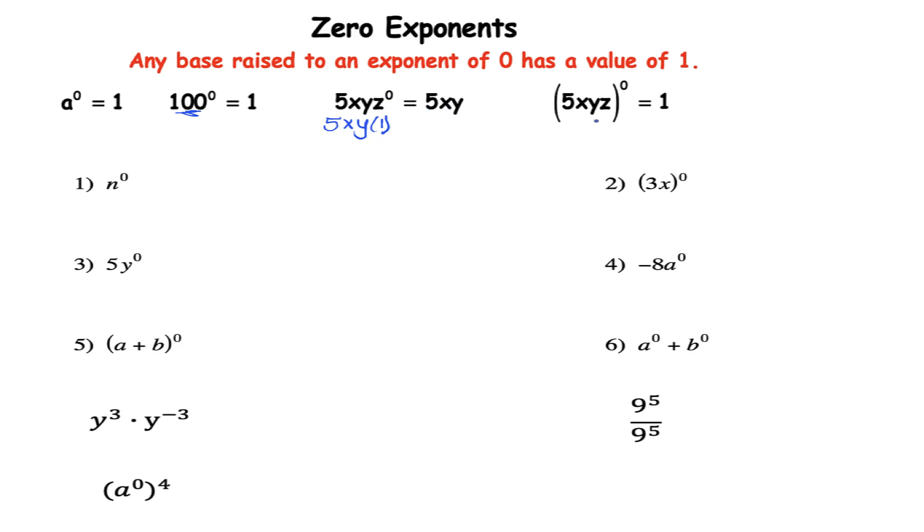In this example here notice that the 5xyz is in parentheses and then outside of the parentheses you have the exponent of zero. Basically what that means is that everyone inside of the parentheses is going to receive the exponent of zero. So you have 5 to the zero, the x is raised to the zero, the y is raised to the zero, and the z is raised to the zero.